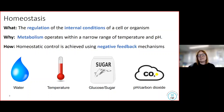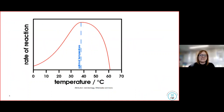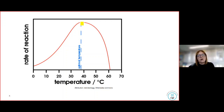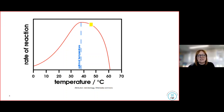The body also wants to maintain pH and carbon dioxide levels. This is an enzyme graph you probably recognise from Year 10. Enzymes have an optimal temperature — they work best at 37 degrees. As soon as we move away from 37 degrees, whether the internal temperature decreases or increases, the rate of reaction for metabolism — respiration, digestion, and other processes — doesn't happen as effectively. So it's important the body maintains 37 degrees.